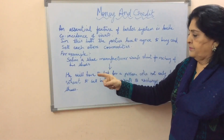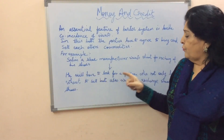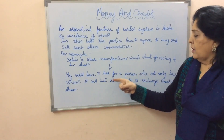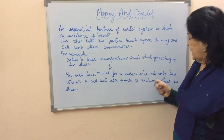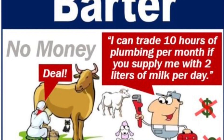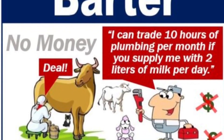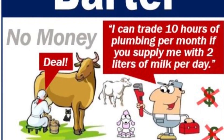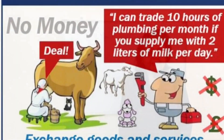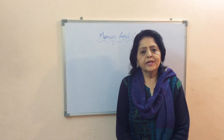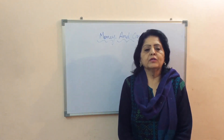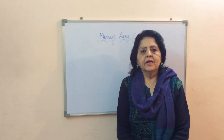For example, Salim, a shoe manufacturer, wants wheat in exchange for his shoes. He will have to look for a person who not only has wheat to sell but also wants to exchange that wheat for shoes.